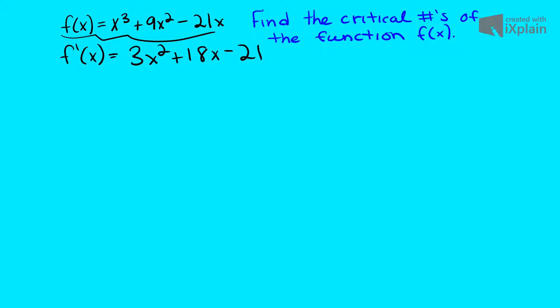From here what we want to do is figure out if we can simplify this at all, so what I like to do is pull out a 3, and we're left with x squared plus 6x minus 7, and from here we're going to try to simplify this even more.